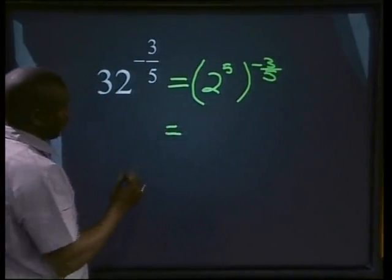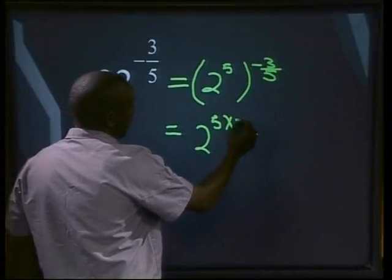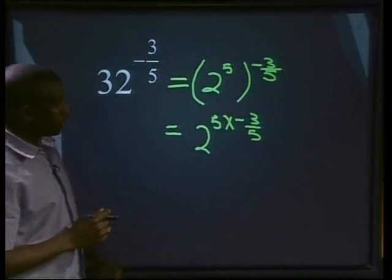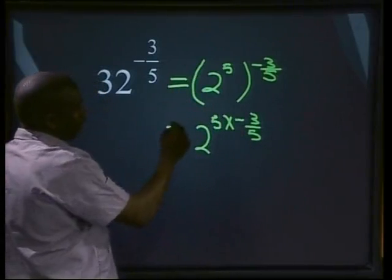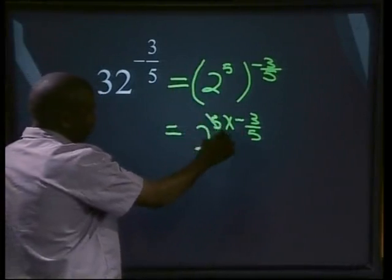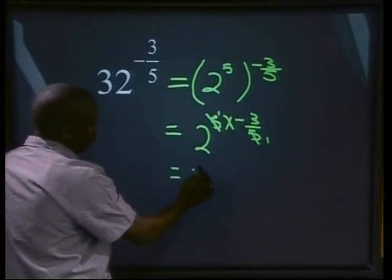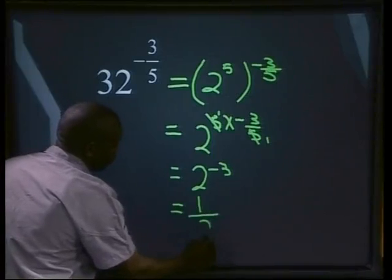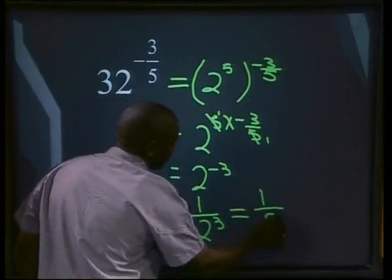This will be the same as 2 to the power of 5 multiplied by minus 3 over 5. Now we have to be careful of the negative exponent. Remember, if you have a negative exponent, it will be 1 over the base to that exponent. First, let's cancel out: 5 goes into 5 once, into 5 once. That gives us 2 to the power of minus 3, which will be the same as 1 over 2 to the power of 3, and that equals 1 over 8.